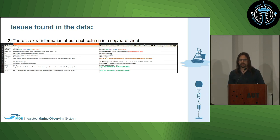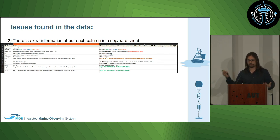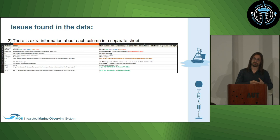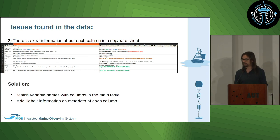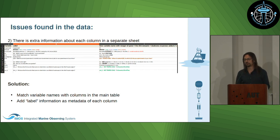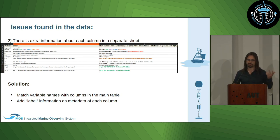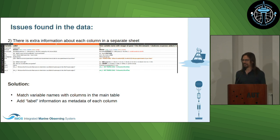Another issue: this Excel file actually had several worksheets, and one of them had extra information about each column of the data — for example, the full question that was asked to people answering the survey. This is information we want to maintain and provide to users, and it's perfectly suitable to put into the metadata of the data set we're providing. The only issue was matching the rows of this table with the columns of the main table, because the columns of the main table didn't have very clean names, but with a bit of work we managed to do that and keep all the extra information.